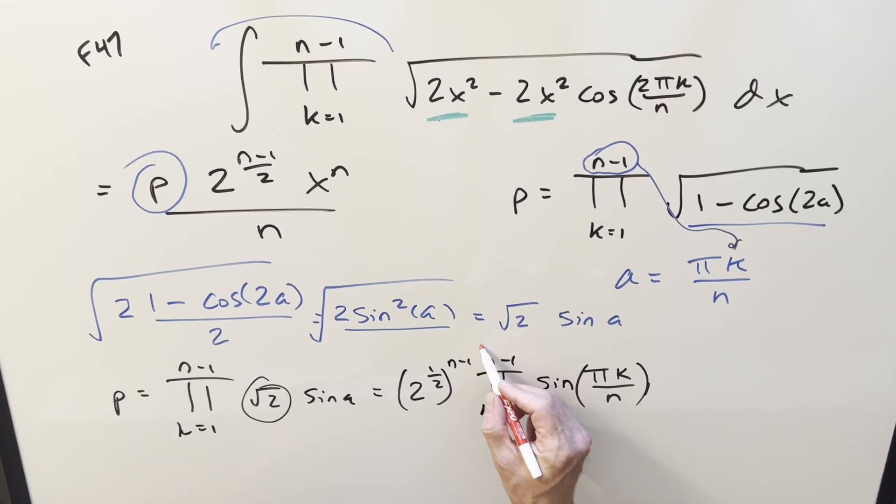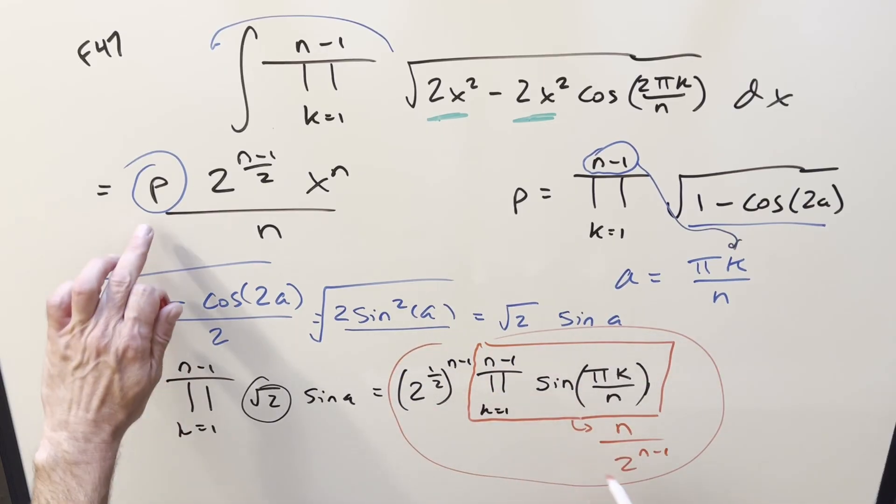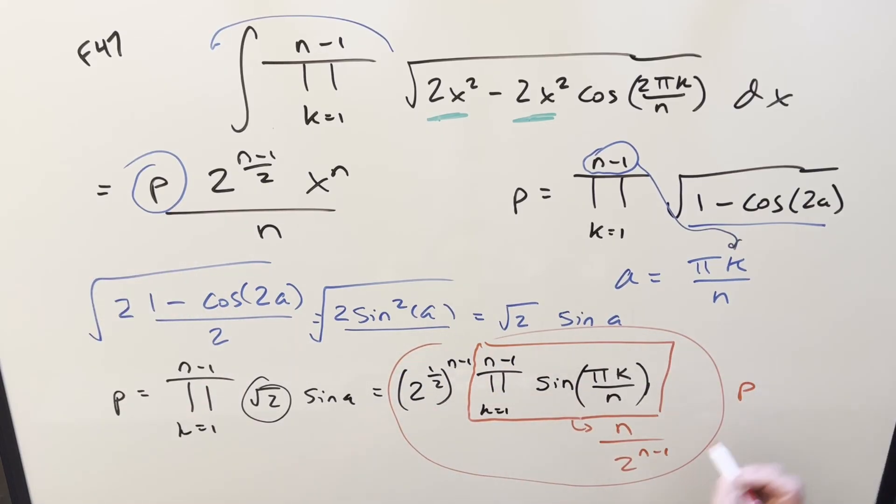But now here's the key to the whole thing. This product right here, the way we have it, the product of sines, this has a well-known formula. This is the same thing as n over 2 to the n minus 1. So all we need to do is take this whole thing here, plug it back in for p, and we can just do a little algebra and finish it off.